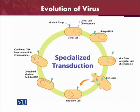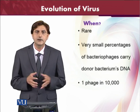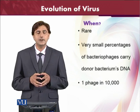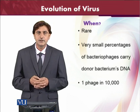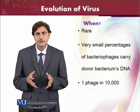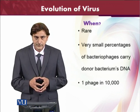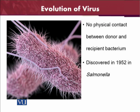The Smith experiment successfully demonstrated transfer of a gene of our own interest, but this transduction is very rare — there are very few chances of it occurring naturally. Only a very small percentage of bacteriophages carry the donor bacterium's DNA. Perhaps one in ten thousand bacteriophages carries some traces of bacterial DNA that can be transferred to another bacterium. There is no physical contact between donor and recipient bacterium, and transduction was discovered in Salmonella in 1952.